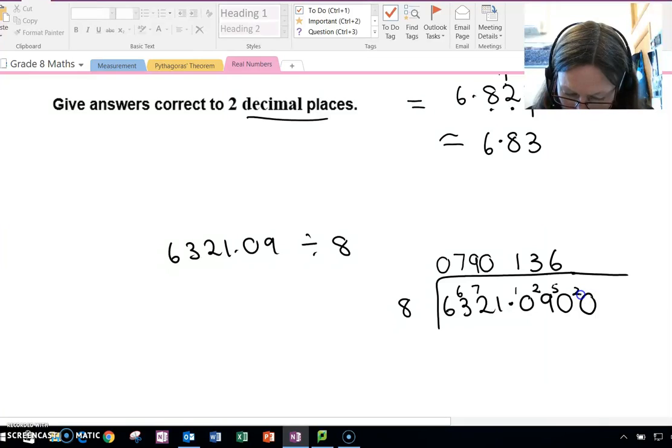So I put down my 0, and I've got 2 to carry over. 8s into 20, 2 times 8 is 16. Put down my 0, I've got 4 to carry over. 8s into 40 goes exactly 5 times.